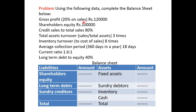Gross profit is 20%, and the amount is 1,20,000, so we can calculate sales. Shareholders' equity amount is given. Credit sales to total sales is 80%. With the help of the first adjustment, we can calculate sales, and in that sales, 80% is credit sales. Total asset turnover ratio is given as 3 times; the formula is sales divided by total assets. Using this, we can calculate total assets, which also equals total liabilities. Inventory turnover ratio is given as 8 times.